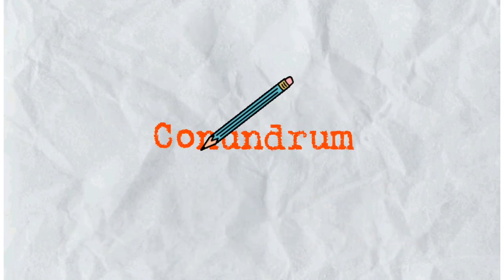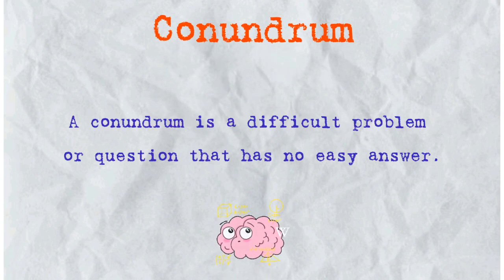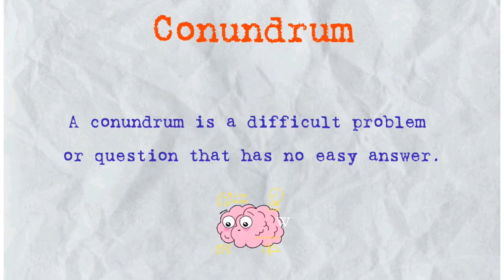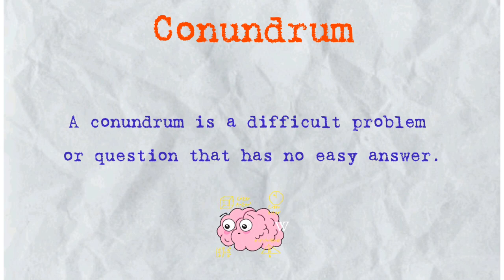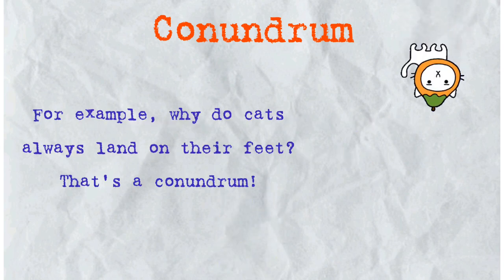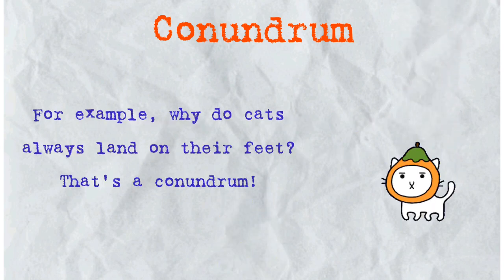The second word is conundrum. A conundrum is a difficult problem or question that has no easy answer. For example, why do cats always land on their feet? That's a conundrum.